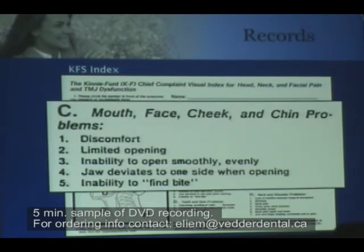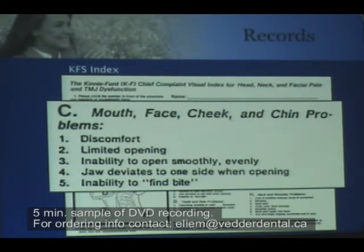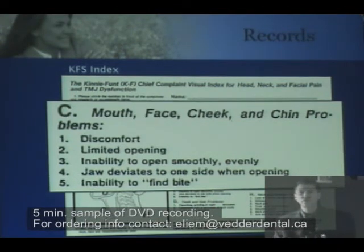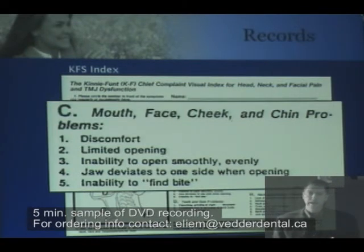My job then is to understand why they may circle limited opening. Is it a disc interference disorder? Is it muscular in nature? Can I see why they say what they say? Inability to find bite may be the temporalis hyperactivity. So we associate concerns based on what we hear, and then examine the relationship.